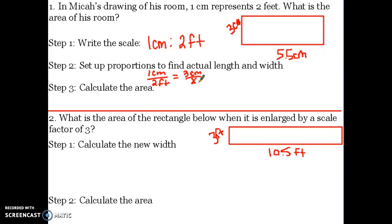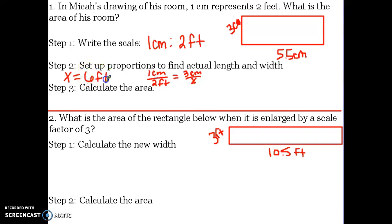When you have a proportion, you cross multiply. One times x is one x, and two times three is six. Anytime you have a coefficient of one, you just write whatever that variable is. So the width is six feet.